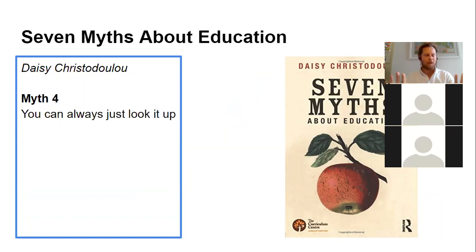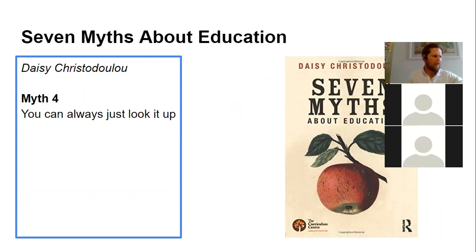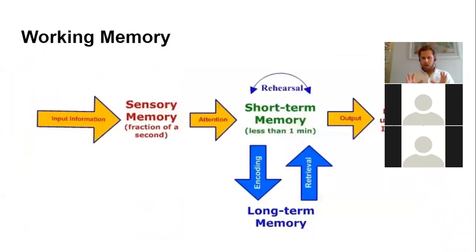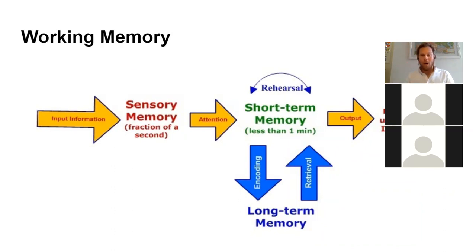Now I love Google, and I think research skills are important, but Daisy Christodoulou points to several flaws in this, and a lot of it goes back to ideas coming out now about working memory and long-term memory. Some of you might have started to see things like this in school presentations — pictures of brains with arrows going in different directions.